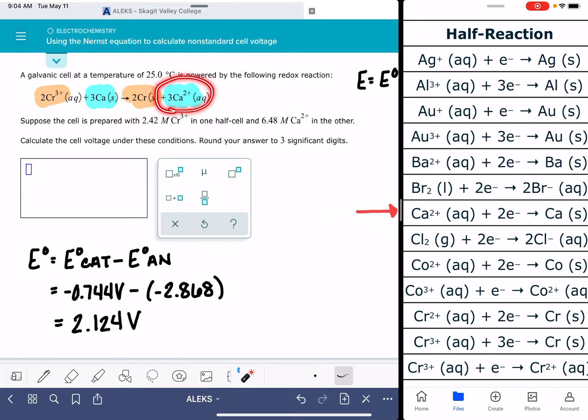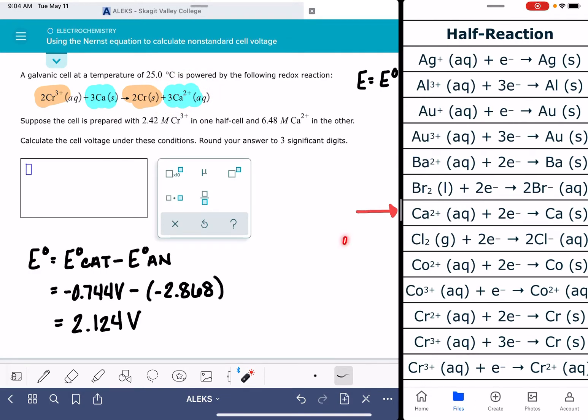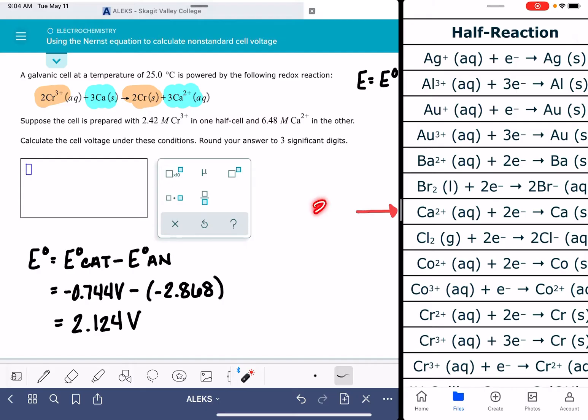Notice in our overall equation, the stoichiometric coefficient for calcium and the calcium ion is 3. And in this half reaction, the stoichiometric coefficients are only 1. So what we did, what somebody did, was take this half reaction and multiply all of the stoichiometric coefficients by 3.